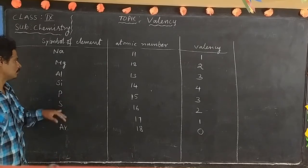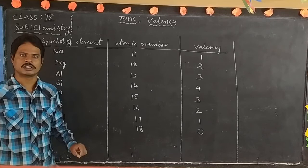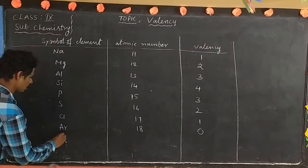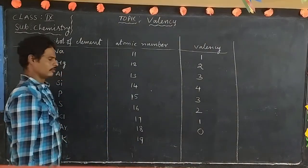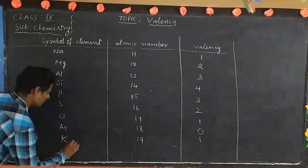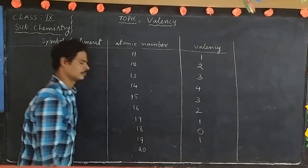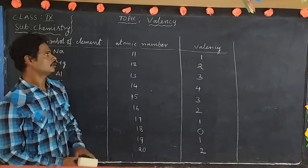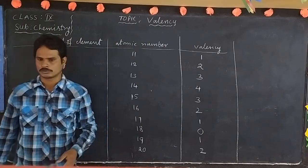Helium, neon, and argon are the inert gases — inert means inactive nature. Potassium, atomic number 19, valency 1. Calcium, atomic number 20, valency 2. This is about valency. Thank you students — remaining topics we will discuss next class.